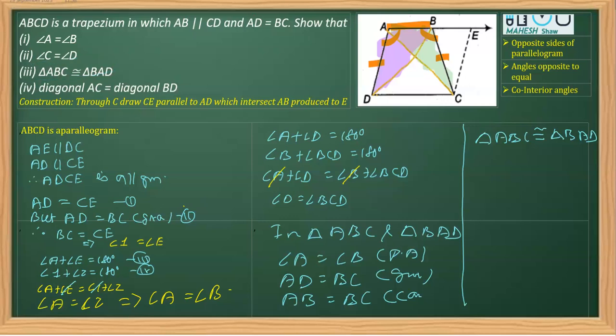In the fourth part, we have to prove AC equals BD. Since triangle ABC is congruent to triangle BAD, we can write AC equals BD by CPCT (corresponding parts of congruent triangles). That is how all four parts of this question are completed.